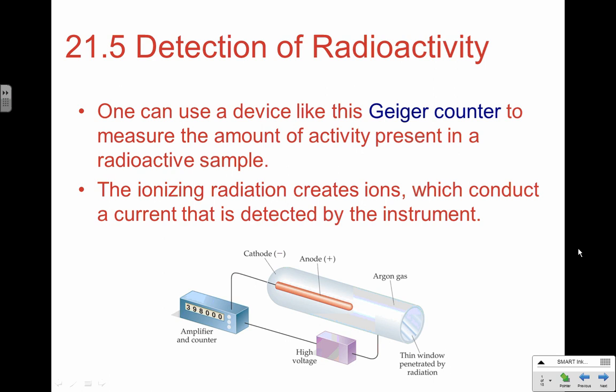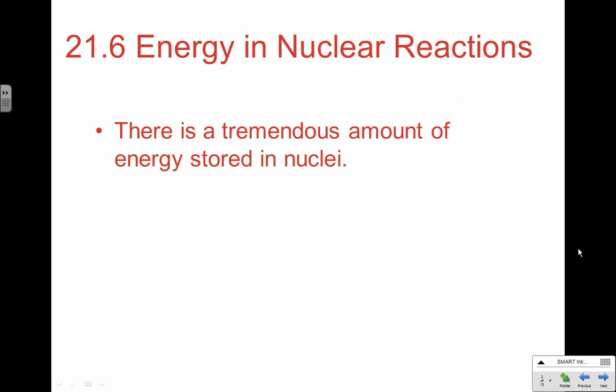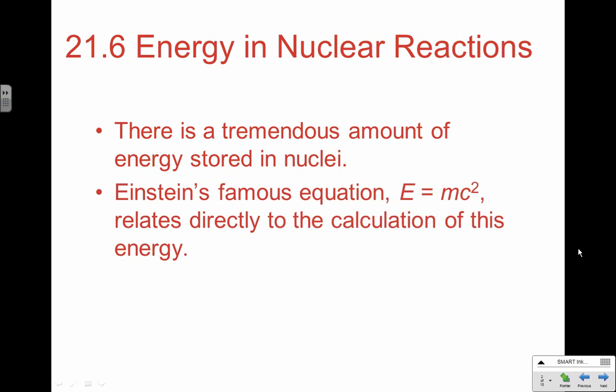The ionizing radiation allows the Geiger counter to conduct electricity for a brief instant, which trips the trigger and counts one. That's how we detect ionizing radiation and how much is coming off a sample. Now, there is a tremendous amount of energy stored in a nucleus, and in section 21.6 we're going to look at that energy. This is the first time we'll actually use Einstein's equation — E = mc² — which you've all heard of many times but never really applied.